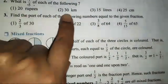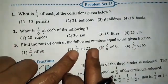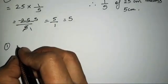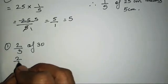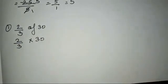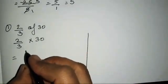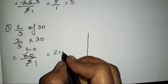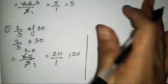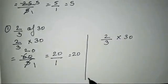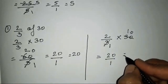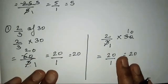Question 3 asks you to find the part of each number equal to the given fraction. The first sum is 2/3 of 30, meaning 2/3 × 30. One method: 2×30 = 60/3, and 3×20 = 60, so the answer is 20. Another method: divide 30 by 3 first to get 10, then multiply by 2 to get 20. Both methods give the same answer.